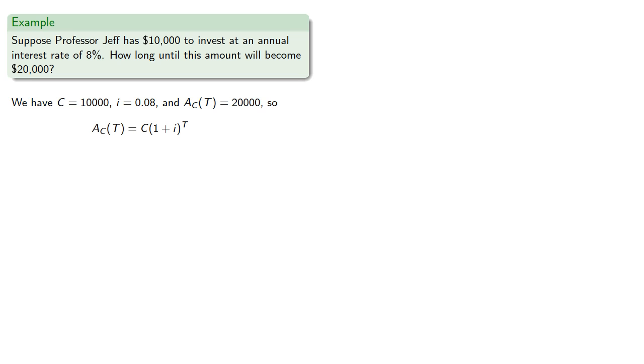Substituting these into our amount equation gives us... And the one thing we don't know is the time t. Since the right-hand side is a product, we'll begin by dividing by $10,000.